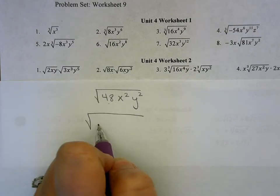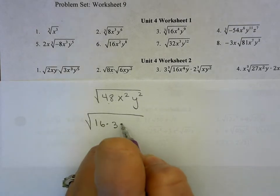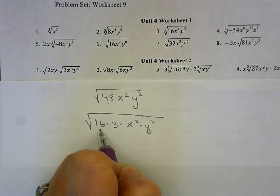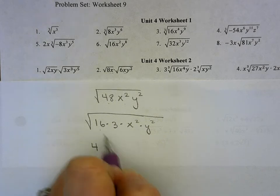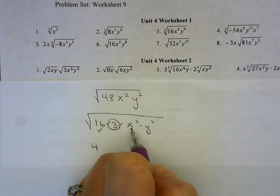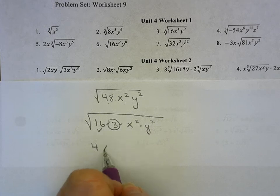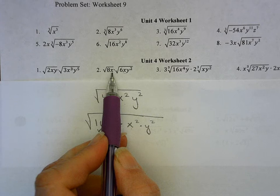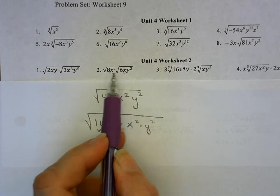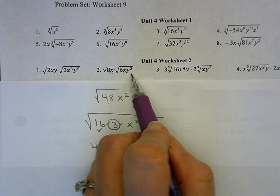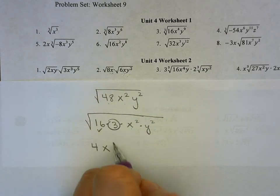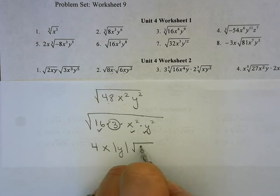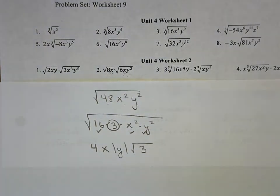48 is 16 times 3. I don't need to split off an x or a y because I have an even power. The square root of 16 is 4. I don't know the square root of 3. For x squared, I would normally say absolute value of x, but in this case it doesn't need absolute value because originally it was x to the first, not x squared. The y squared was in the original problem, so that has to be absolute value of y. The only thing I don't know the root of is 3.